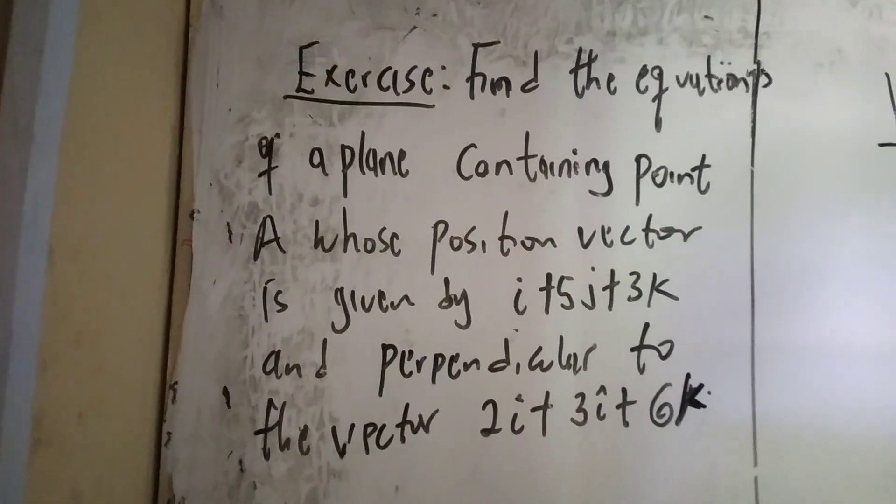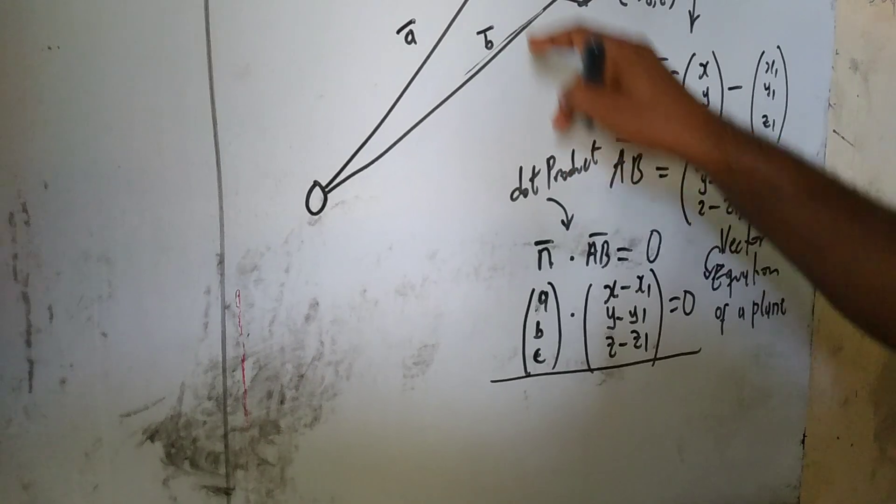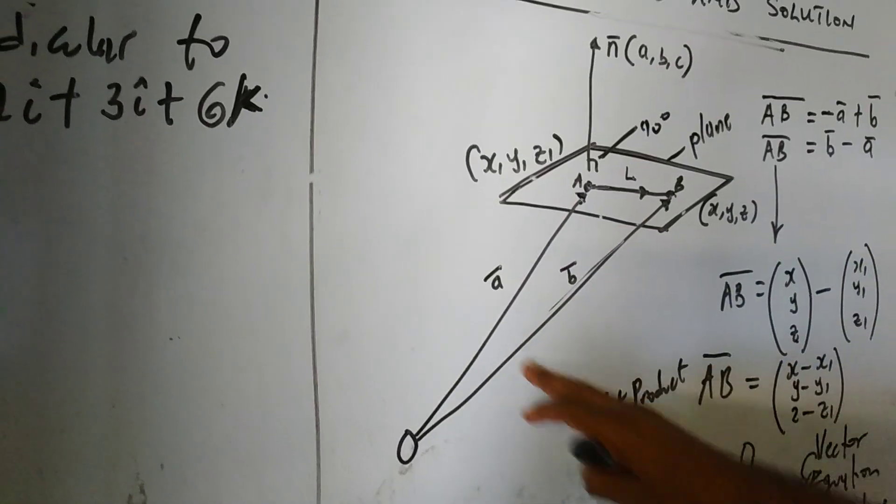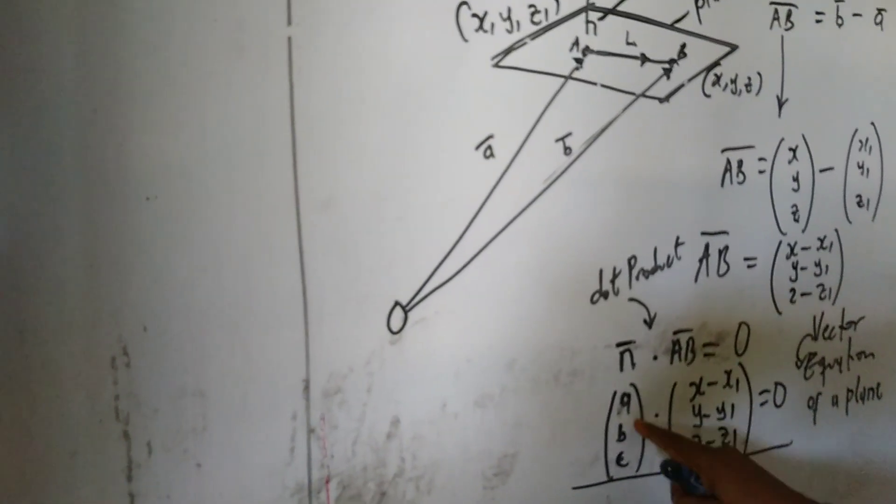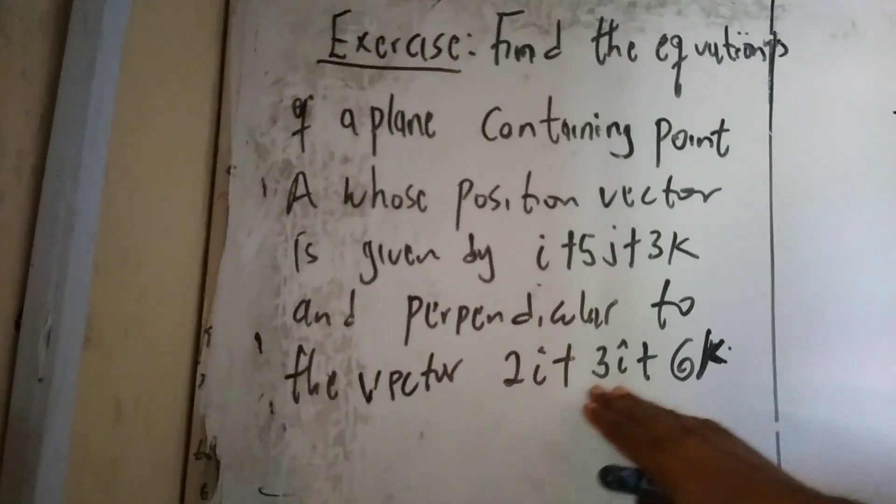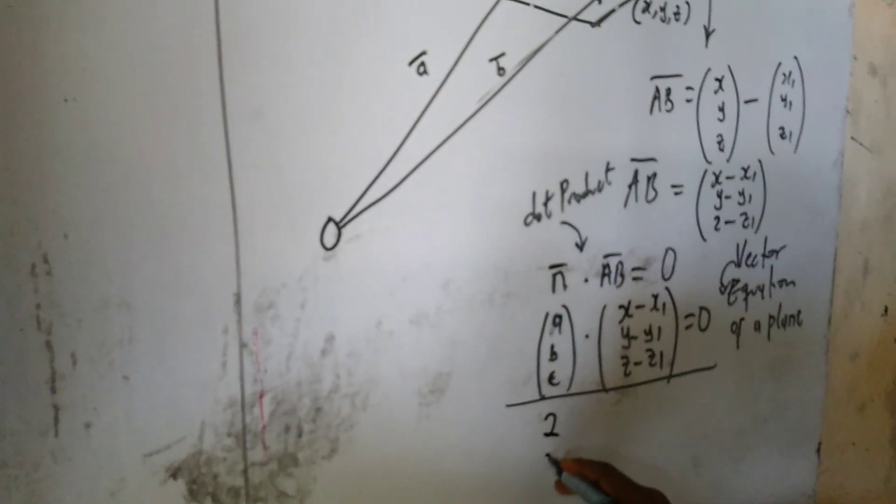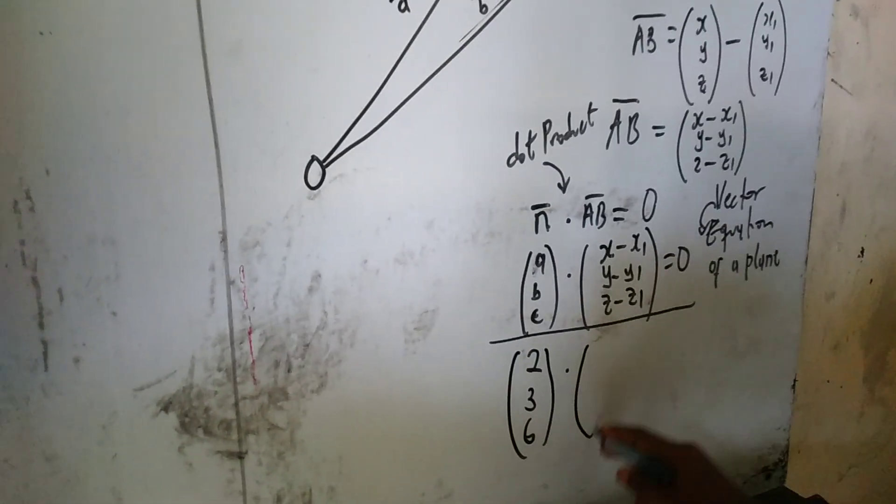Now, this particular vector A is actually this vector here, which is given as X1, Y1, Z1. And then, the vector that is perpendicular to is 2i plus 3j plus 6k. So, the perpendicular component will be 2, 3, and 6. So, I'm going to write 2, 3, and 6 dot.